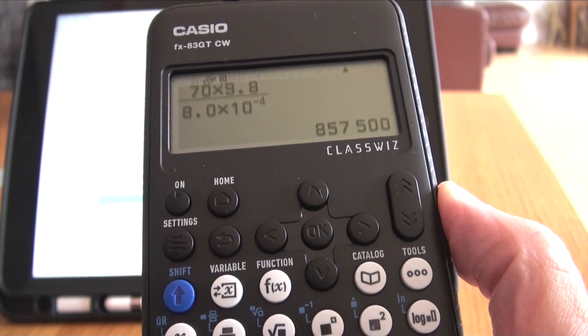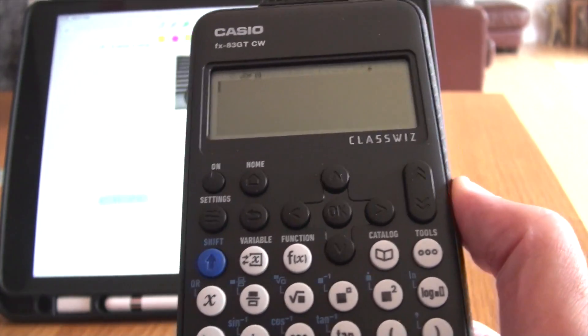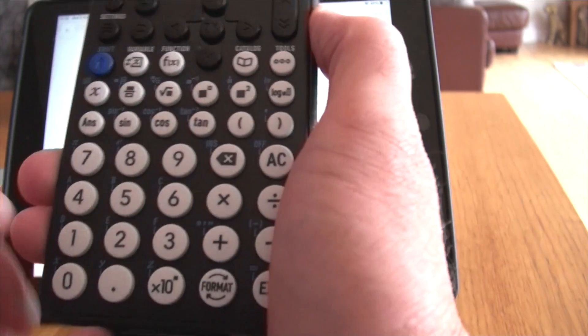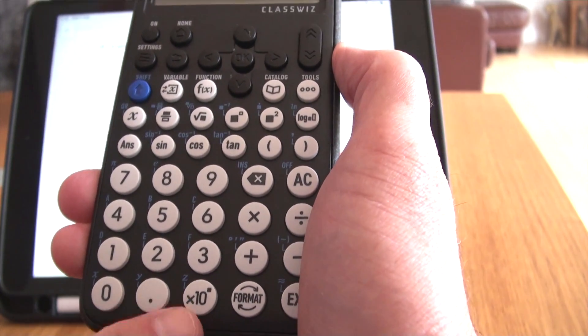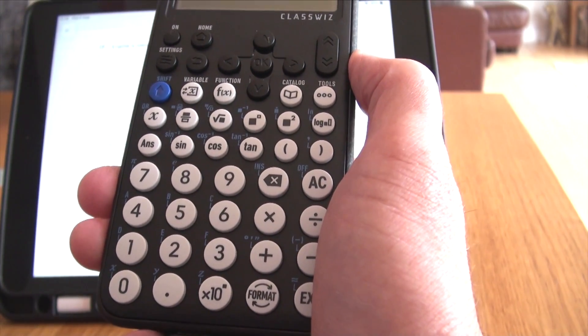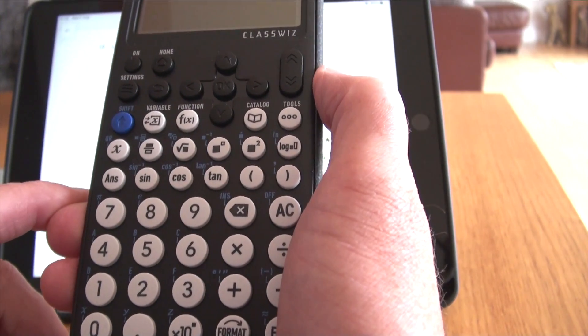You have to use the fraction button. If you try and do it the old way, that's the way I would have done it with an old Casio calculator, then it ain't going to work. And the reason for that is, the times 10 to the power button no longer functions the way it used to do. And that's an issue with these calculators. You have to use the fraction button.